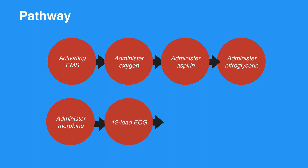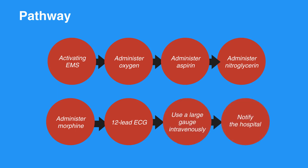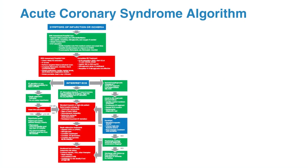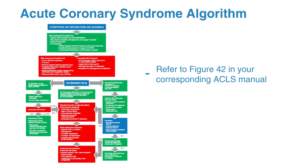Obtain a 12-lead ECG and evaluate the individual for MI by ST elevation or depression and poor R-wave progression. Use a large gauge IV in the antecubital fossa. Notify the hospital and take the individual to a PCI center if probable STEMI. Activate the ACS protocol at the hospital. For the acute coronary syndrome algorithm, refer to figure 42 in your corresponding ACLS manual.